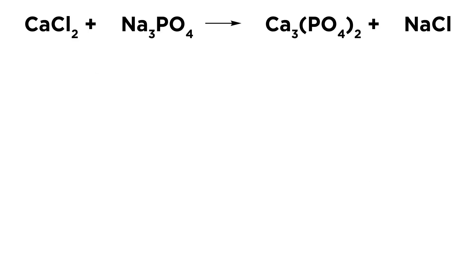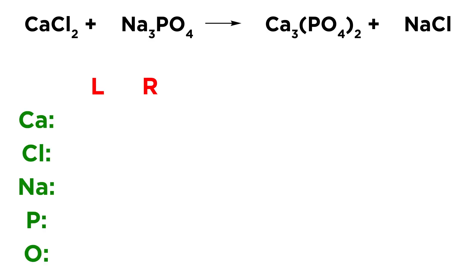Let's start with this first one. We have CaCl2 plus Na3PO4 yields Ca3(PO4)2 plus NaCl. If you have trouble with these and want to be very thorough in your approach, the best way is to make a table where we've listed every element involved in the reaction, and then tally the number of atoms on the left side and on the right side.